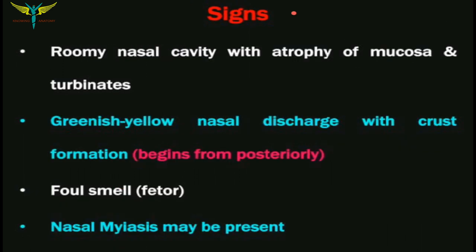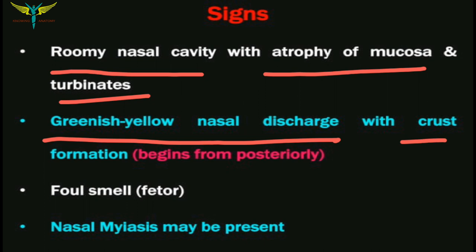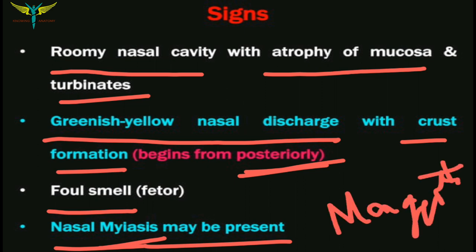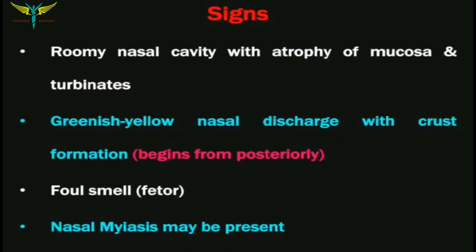The signs a doctor can examine include roomy nasal cavities with atrophy of the mucosa and turbinates, visible on nasal examination. Greenish-yellow nasal discharge with crust formation, which usually begins posteriorly and can be seen on posterior rhinoscopy. Foul smell can be noted during examination. Nasal myiasis may also be present — myiasis refers to formation of maggots due to decreased nerve sensation and increased foul-smelling discharge from the nose.